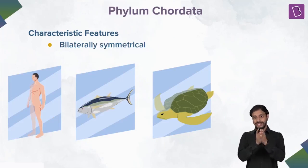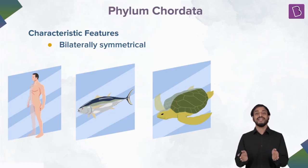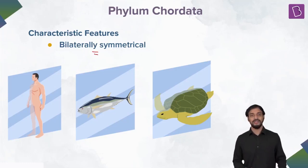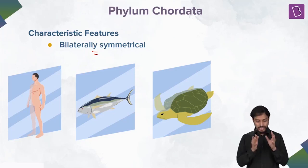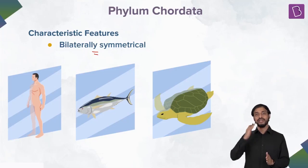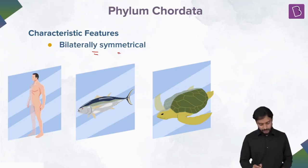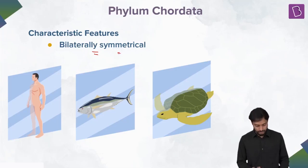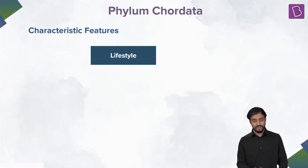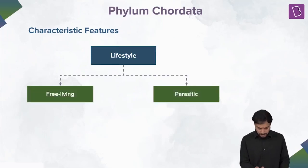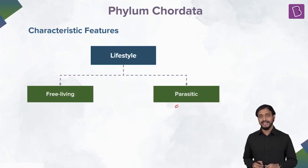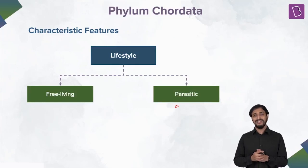We are bilaterally symmetrical — symmetry is one of the characteristic features. Now let's talk about lifestyle: free living and parasitic. Can these animals be parasitic? What are parasites? Parasites are organisms that take nutrition from a host organism.